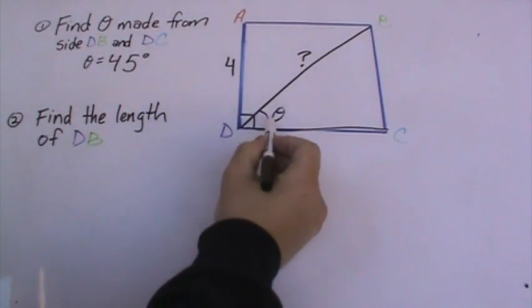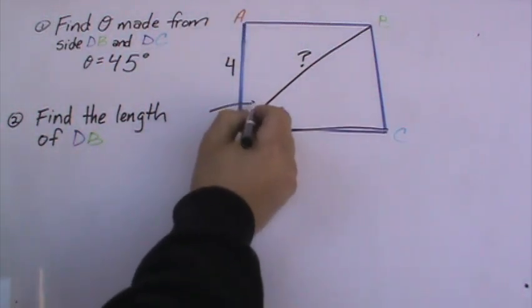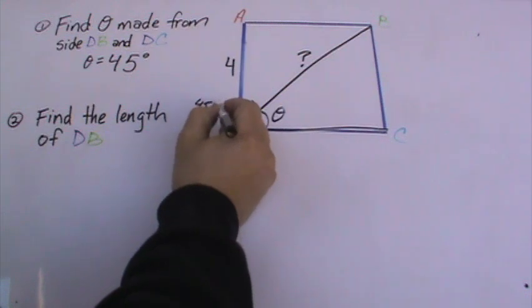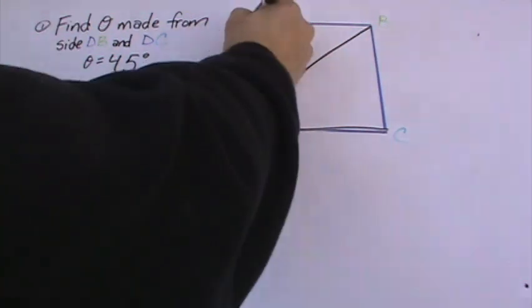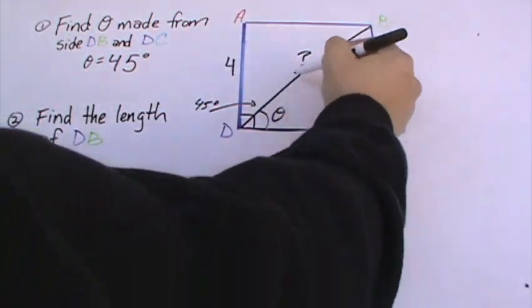Since we know that this is 45 degrees, this whole angle here is 90, that must make this also 45 degrees. So what we want to do, since we already have the length of this side, we're looking for this.